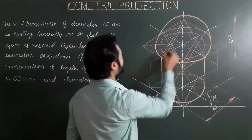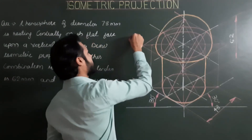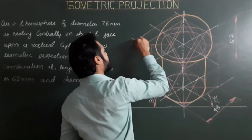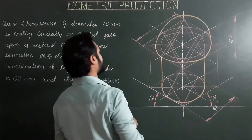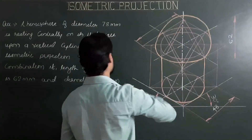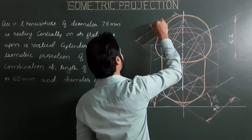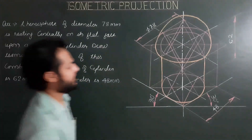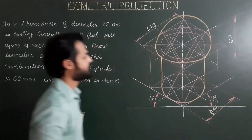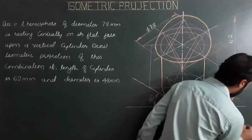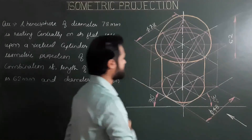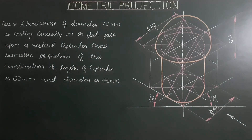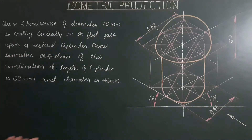For dimensions of the sphere — show the diameter of the hemisphere here also. Diameter is 78 mm and diameter of cylinder is 48 mm. For direction of observation, both directions are correct, but we go for the first direction. This is the final projection of the given combination.